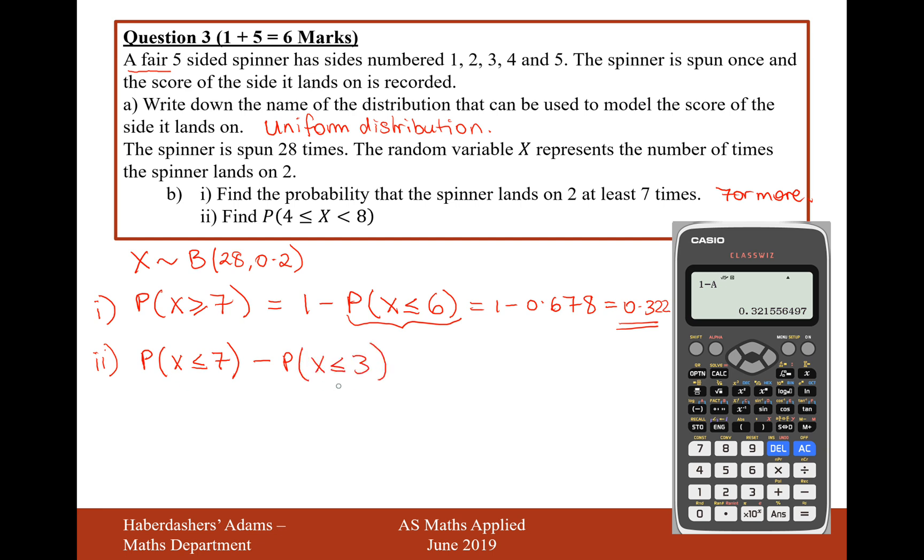Now, what that's going to leave us with is, I've worked out the probability of scoring, rolling the, sorry, spinning the number 2, 7, 6, 5, 4, 3, 2, 1, or 0 times.